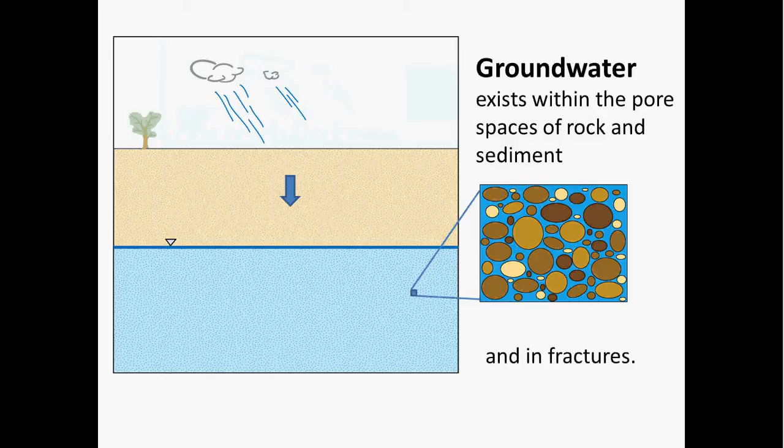In addition to this, groundwater can also exist in fractures. This can be an important volume in terms of where groundwater exists, particularly in crystalline rock like granite or basalt. They don't typically contain a lot of pore space like a sandstone would, but they can still hold a fair amount of water in their fractures.